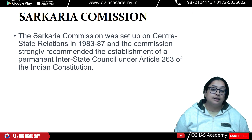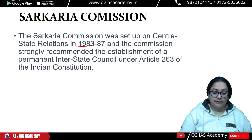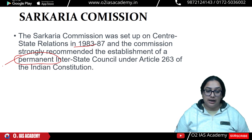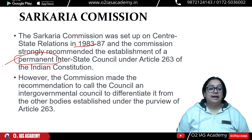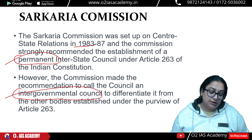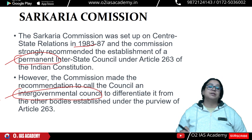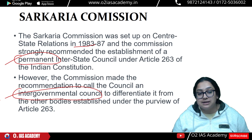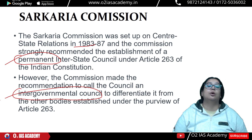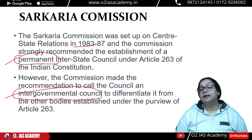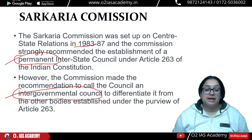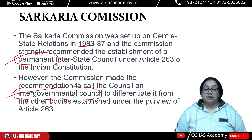The Sarkaria Commission (1983–87) recommended establishing a permanent Interstate Council, and suggested it be called the Intergovernmental Council to distinguish it from other authorities. The commission said it should not be left to the president to constitute the council only when public interest demands — rather, a permanent body should be established.